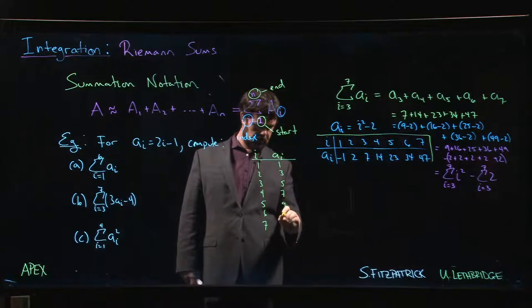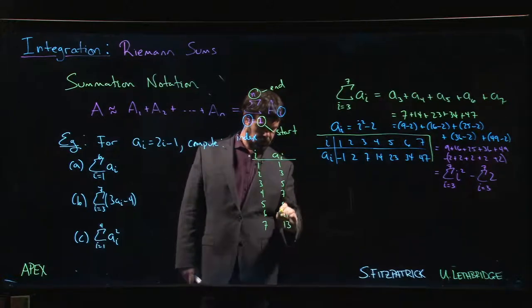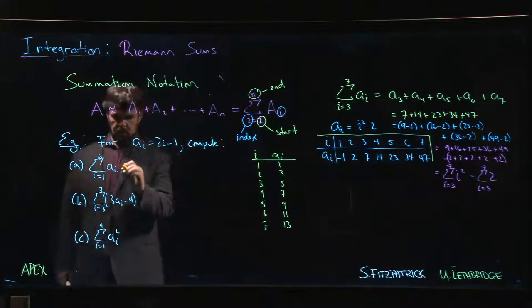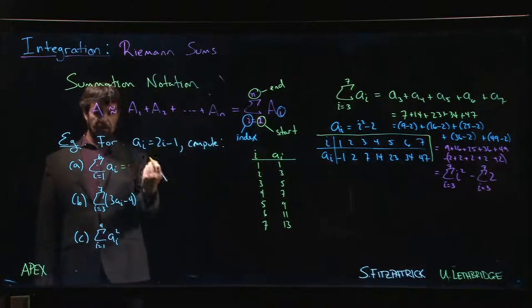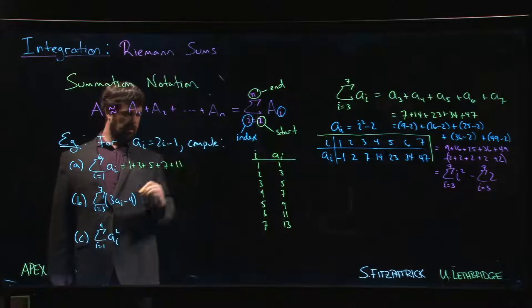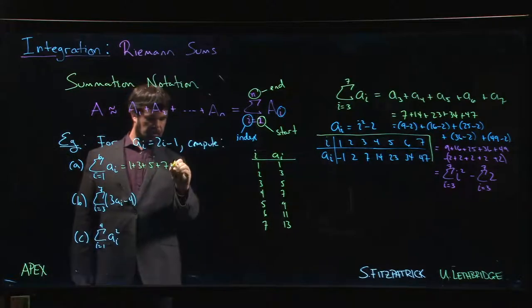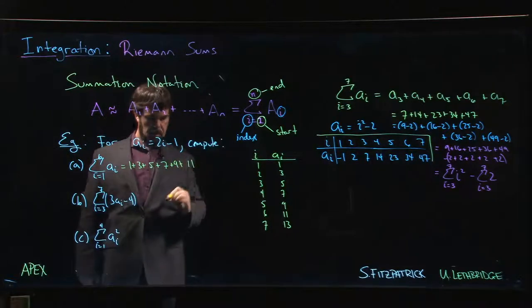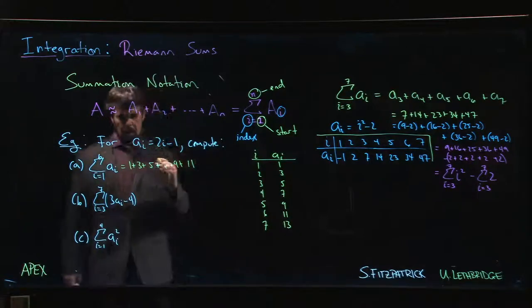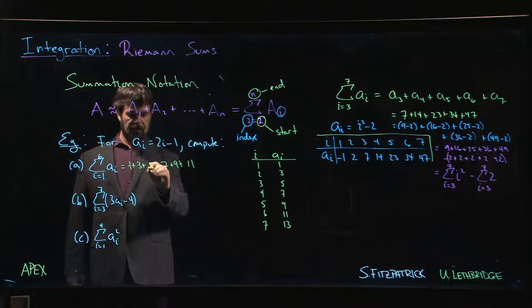Okay, so what do we have here? It's just the sum of the first six odd numbers, so it's one plus three plus five plus seven plus nine plus eleven. And then you add them up: one plus three is four, plus five is nine, plus seven is sixteen.